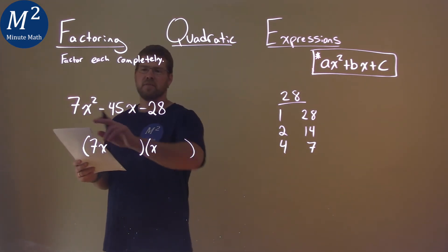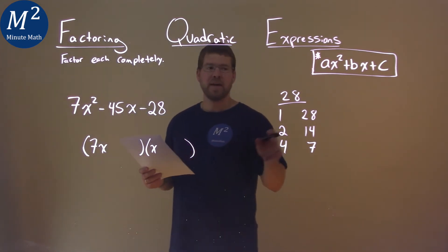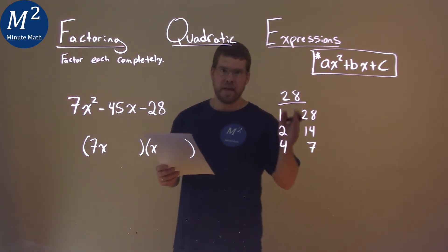Now chances are, because 7 is a larger number being multiplied, some of the numbers in the right hand column will be negative. That's what we're thinking because we want to get something close to -45.